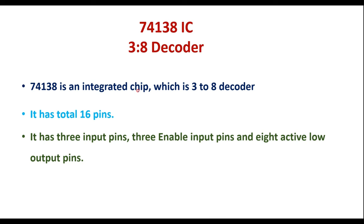The 74138 is an integrated chip which is a 3-to-8 decoder. It has a total of 16 pins: 3 input pins, 3 enable input pins, and 8 active-low output pins. The 3-to-8 decoder I explained in my previous lecture had active-high output pins, but the 74138 has 8 active-low output pins.